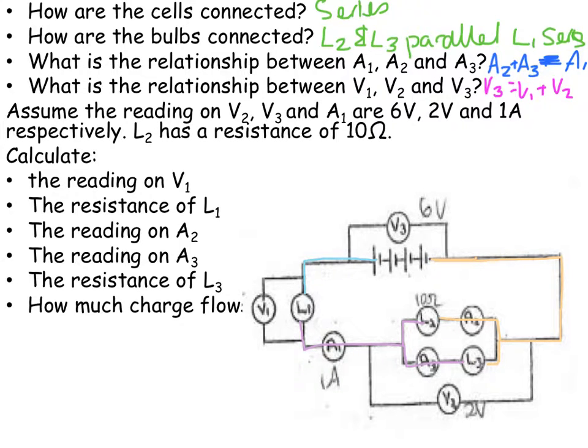Calculate the reading first on V1. I've got that 6 volts is on V3, and I've got that 2 volts is on V2, so these all add up, so that must be 4 volts. The resistance of L1, so I can now say R is equal to V over I, and that is equal to 4 over 1, because this is on the main branch, and it's going through that light bulb as well. And then that's equal to 4 ohms.